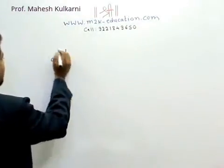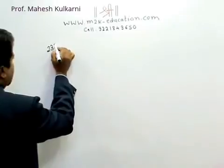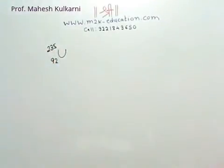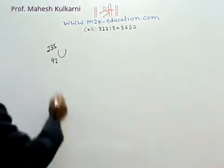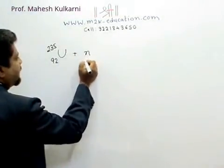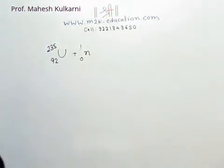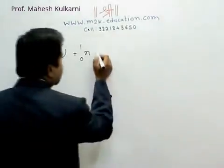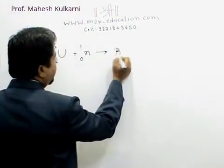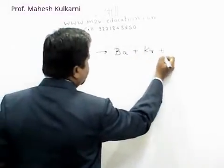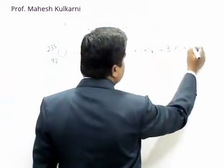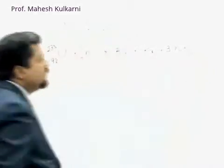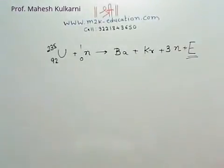In general, we are aware that uranium with atomic number 92 and mass number 235 - keep in mind the mass number is important because uranium-238 is not undergoing fission. This is bombarded by a slow-moving neutron. We are getting barium plus krypton plus three slow-moving neutrons plus tremendous amount of energy.